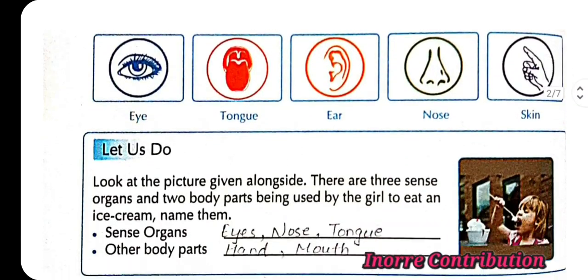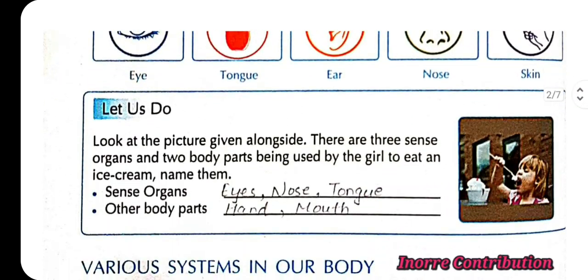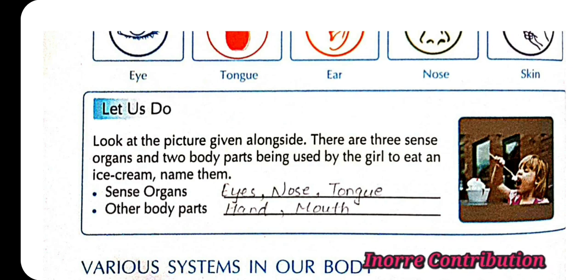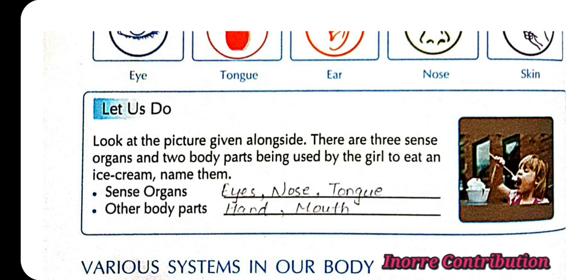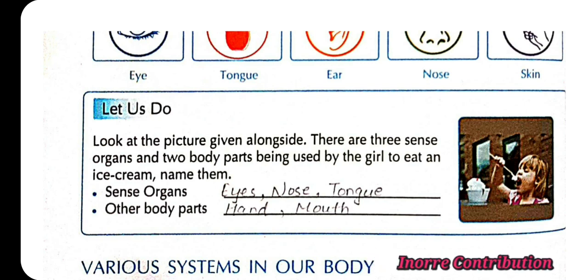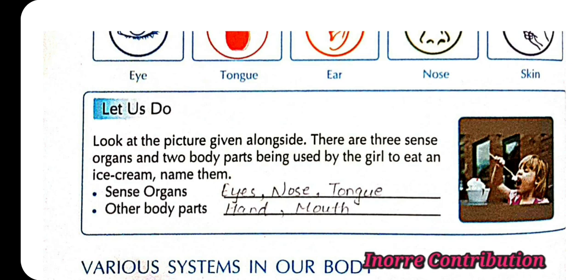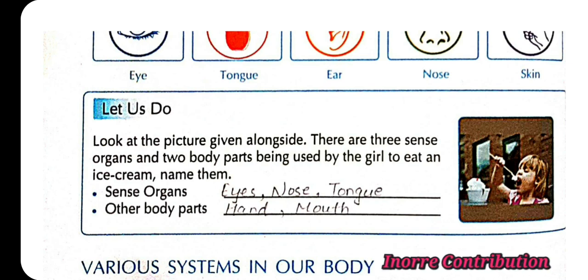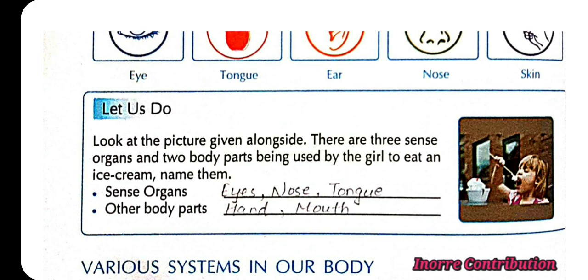Here comes an exercise. Look at the picture given alongside. There are 3 sense organs and 2 body parts being used by the girl to eat an ice cream. Name them. Sense organs: eye, nose, and tongue. Other body parts: hand and mouth.